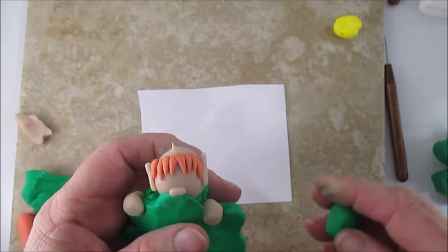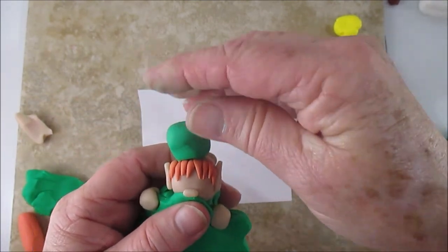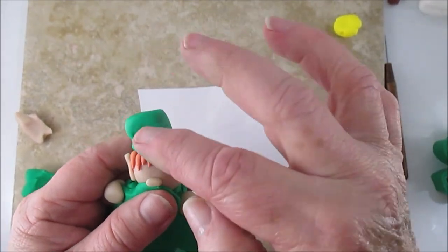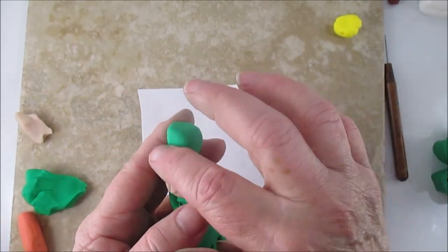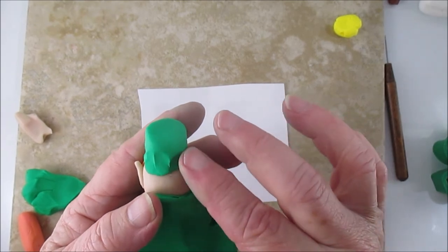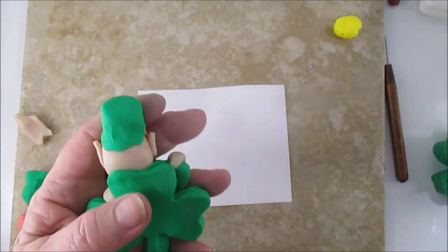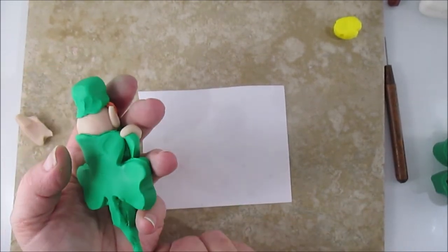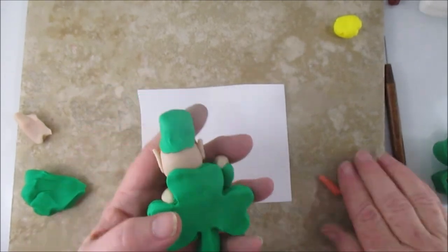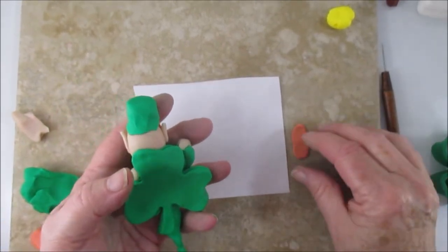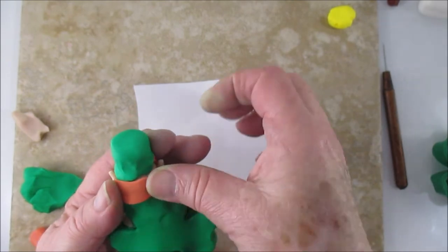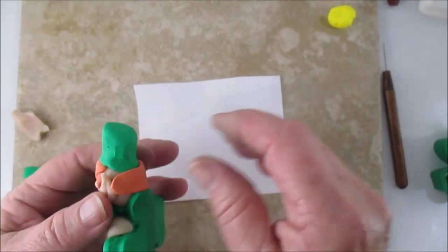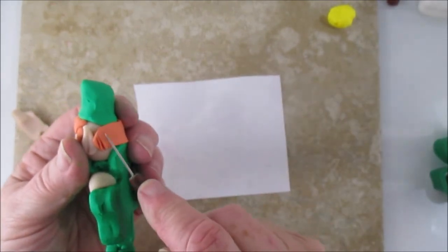All right, now we're just going to make a cube and put it on his head for his hat. Now I don't like to leave him bald in the back, especially when I put hair in the front, so we'll just make a flat little piece of the orange and just texture it with the needle tool.